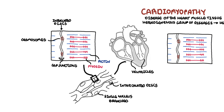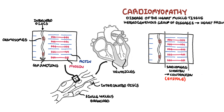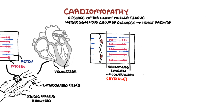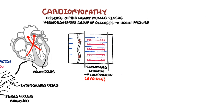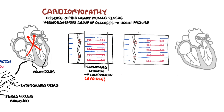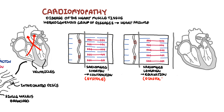The sarcomere shortens during muscle contraction — this is called systole, when the ventricles contract and pump blood out. The sarcomere then lengthens as the cardiac muscle cells relax. This relaxation process is termed diastole, when the ventricles fill with blood, preparing for another contraction.